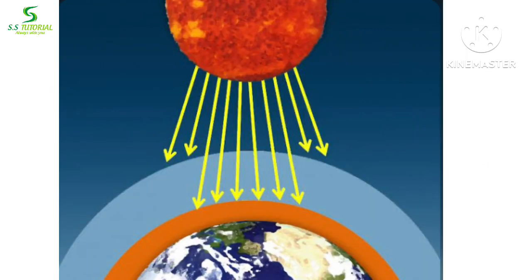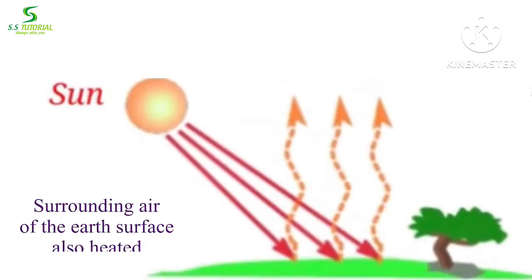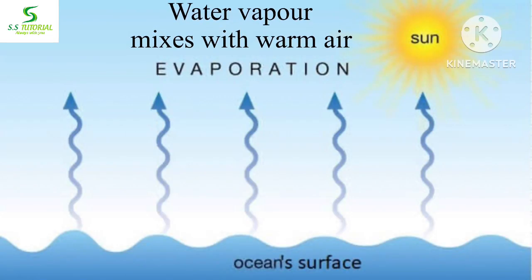The sun heats up the land surface as well as water bodies throughout the day. The surrounding air of the land and water bodies also gets heated. Due to solar insolation, evaporation takes place from the water bodies and water vapor mixes with the warm air.